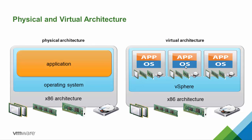In the traditional model, you take a physical server, install the operating system, install the application, and it had exclusive access to all the hardware. In our virtual architecture, we install ESXi — a very thin operating system designed to share the underlying physical resources. With more CPU and compute resources available in this platform, we have the ability to create virtual machines — think of them as a bubble or software construct that isolates each operating system from each other.